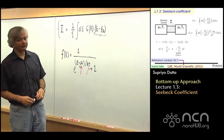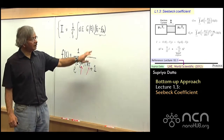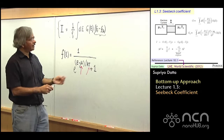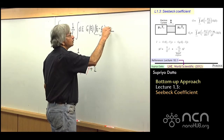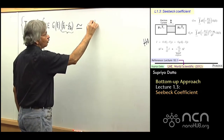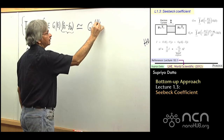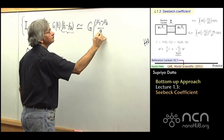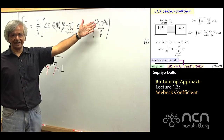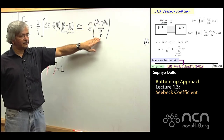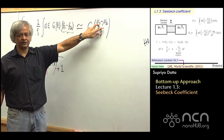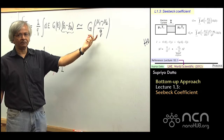If you remember, one thing we had done back in week 1 was: when you have a small voltage difference, we could expand this to look like some effective conductance times this voltage, (μ1 minus μ2) over Q. These μ's are the electrochemical potentials in units of energy. If you divide by the charge on an electron, that's like voltage — so a 1 millielectron-volt difference corresponds to a 1 millivolt voltage.